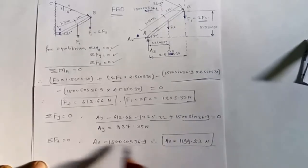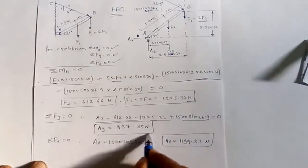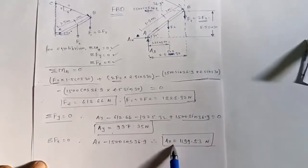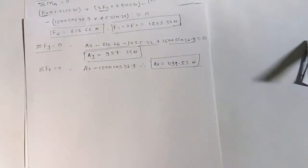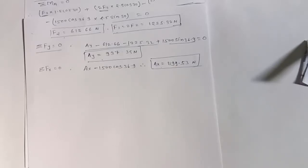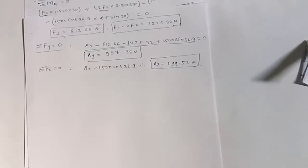So we have calculated all the required answers: F2, F1, Ay, and Ax. The first problem was on a concurrent force system needing two equilibrium conditions, while the second problem was on a non-concurrent force system requiring three conditions including summation of moments equal to zero.